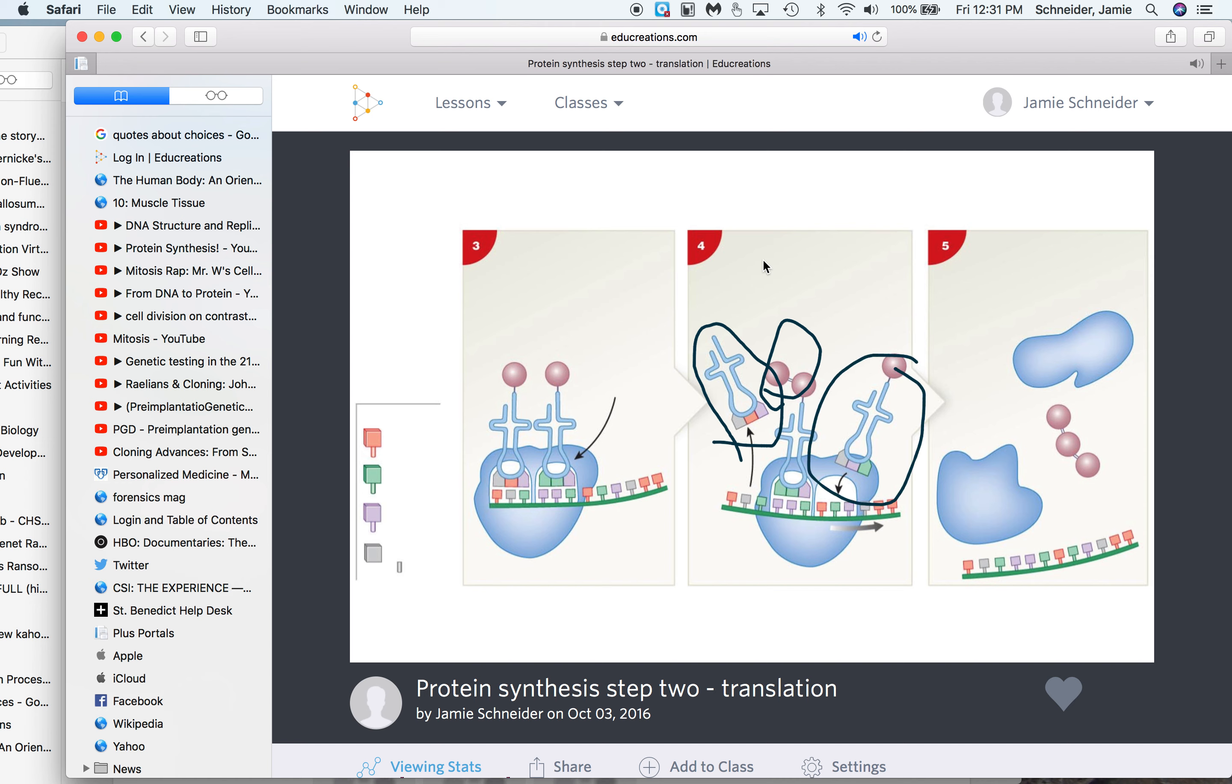Then a third tRNA is going to come up, placing the third amino acid in sequence, with its anticodon again matching the codon of the mRNA. That continues until I have a huge polypeptide chain, which becomes the protein.